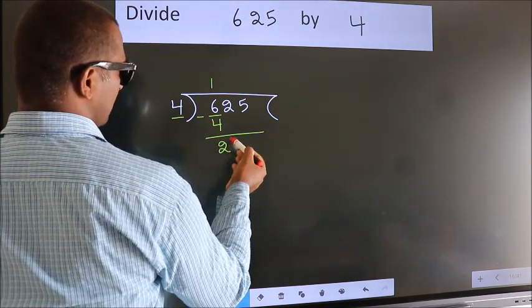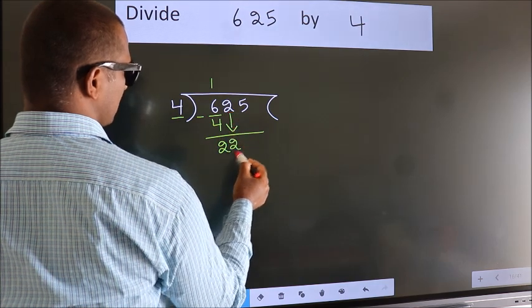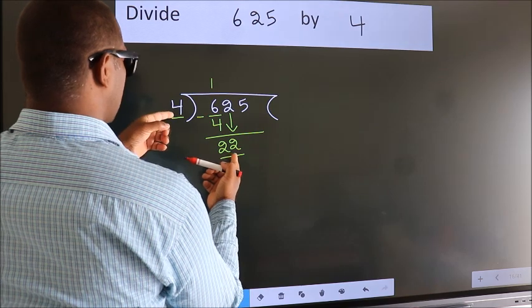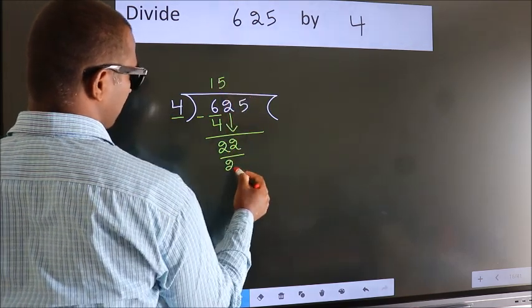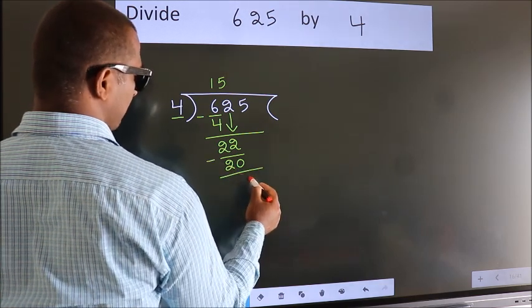After this, bring down the beside number. So 2 down, so 22. A number close to 22 in the 4 table is 4 fives 20. Now we subtract. We get 2.